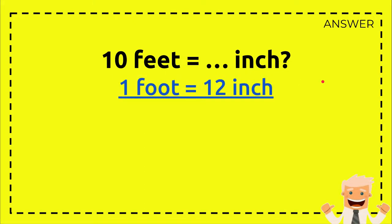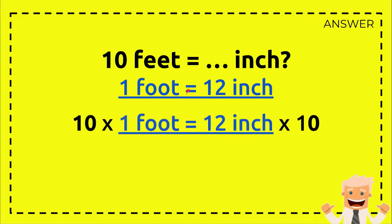You need to write the equation again, the formula again: 1 foot equals 12 inches. Here's how you solve this problem. You need to write down the formula again, 1 foot equals 12 inches.